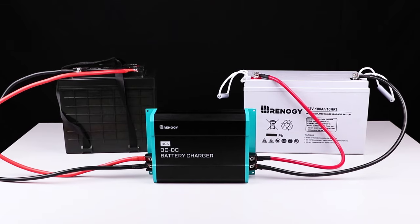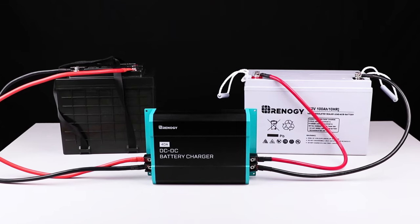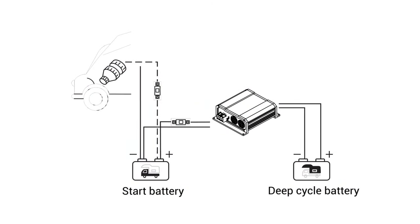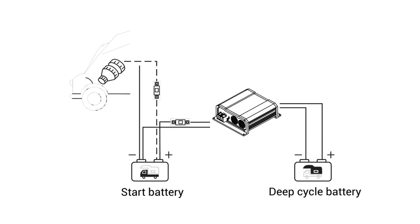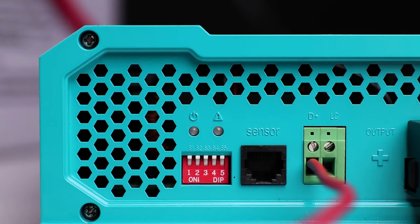Once the charger is connected to the two batteries and the D plus input is connected to a 12-volt source, you can now set the battery type for your system. The battery selection setting is adjusted with the five DIP switches on the side of the unit.